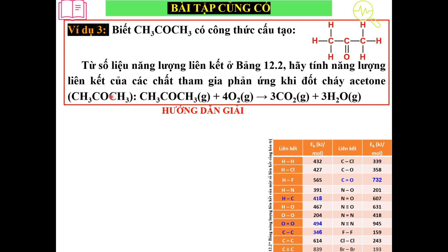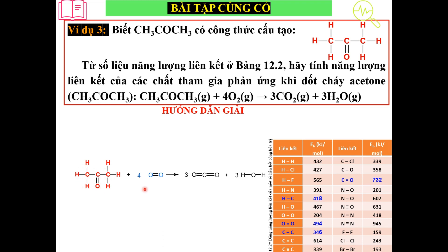Năng lượng liên kết của các chất tham gia chính bằng tổng năng lượng mà chúng ta dùng để phá vỡ mọi liên kết trong 2 phân tử này thành các nguyên tử tự do. Đối với phân tử acetone này thì chúng ta thấy nó có 8 cái liên kết. Như vậy trong 8 liên kết này chúng ta phải dùng năng lượng để phá vỡ tất cả 8 liên kết này ra. Bên đây cũng vậy, oxygen chúng ta cũng cần 1 cái năng lượng để phá vỡ 4 cái phân tử oxygen này.